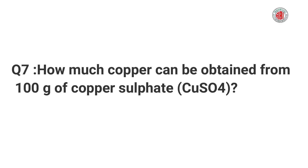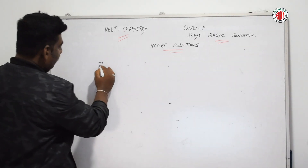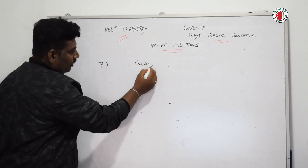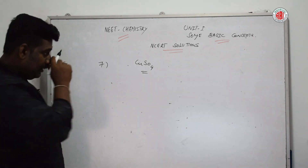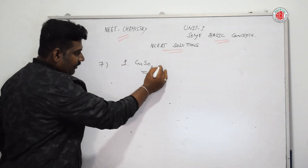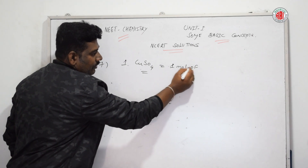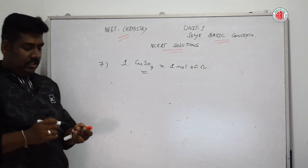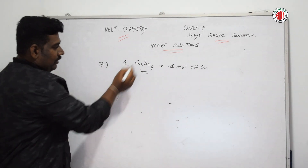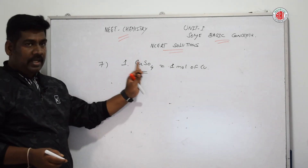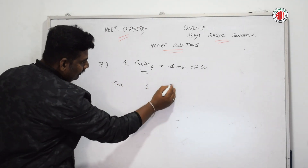The next question: how much copper can be obtained from 100 grams of copper sulfate (CuSO₄)? One mole of copper sulfate contains one mole of copper. Let us find the molar mass of copper sulfate. The compound has three elements: copper, sulfur, and oxygen.